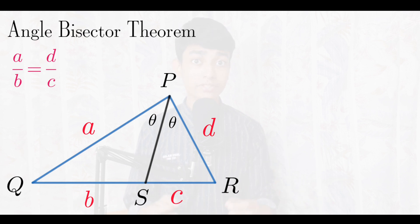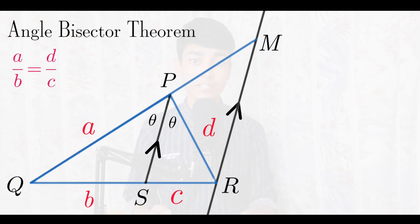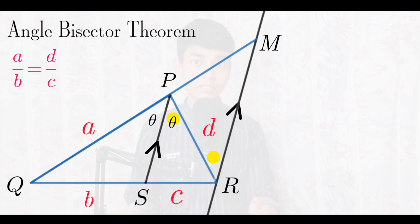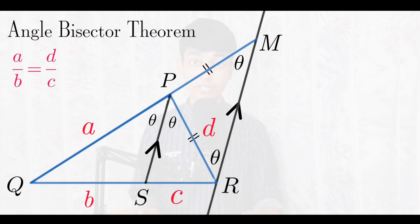Let us find out why these ratios are equal. Take triangle PQR and draw a ray RY that is parallel to PS. Now extend segment PQ as a straight line to meet the ray at a particular point M. As per our construction, segment PS is parallel to segment MR. Since we have parallel lines, we can use the related theorems. The first is that alternate interior angles are equal — therefore angle SPR equals angle PRM, which equals theta. Similarly, corresponding angles are equal — therefore angle QPS equals angle QMR, which also equals theta. Now in triangle PMR, the base two angles are both theta, so the respective sides become equal: PR equals PM, both equal to d.